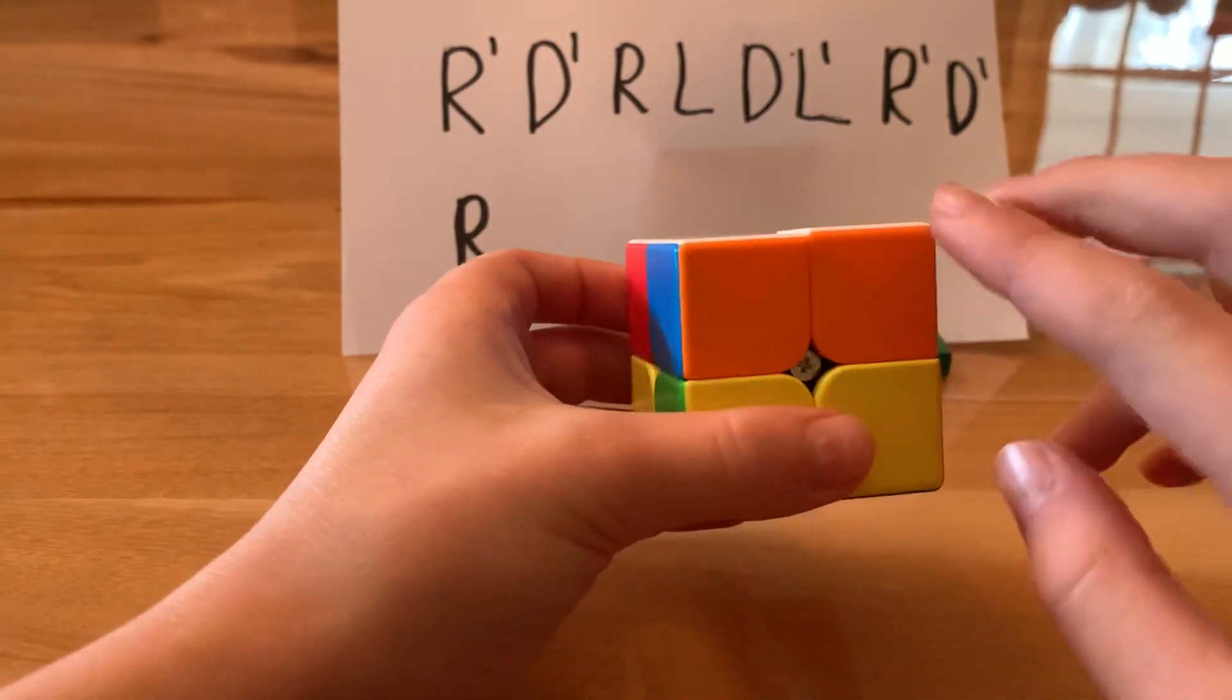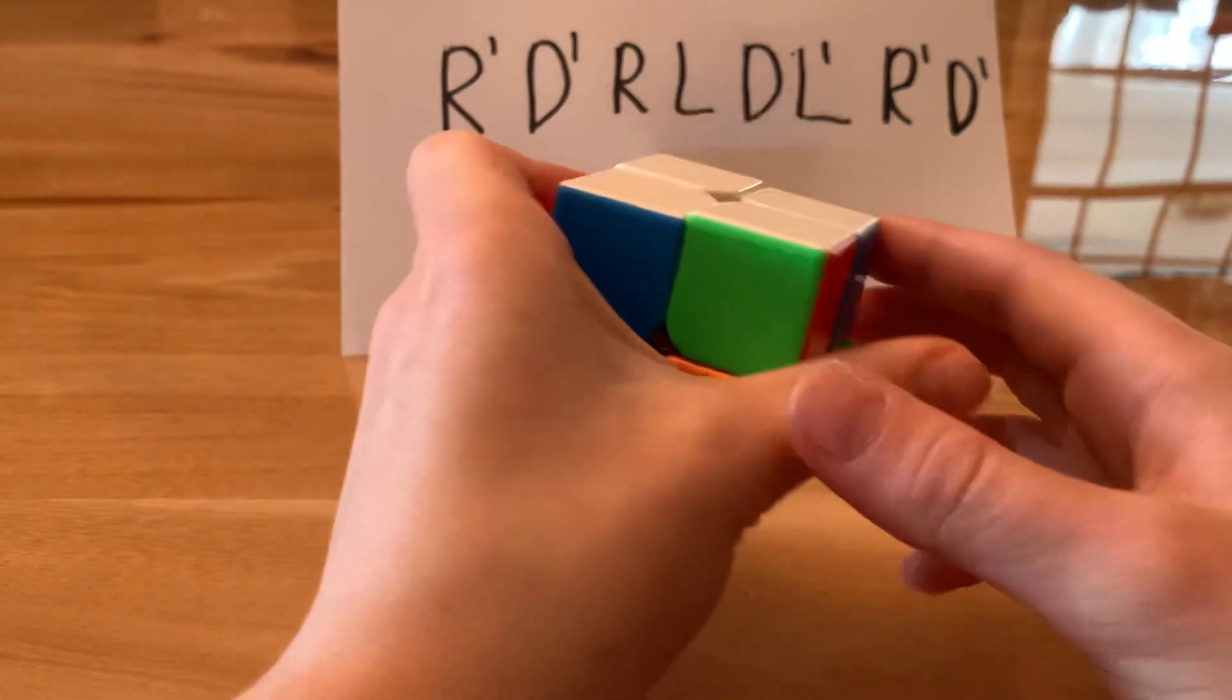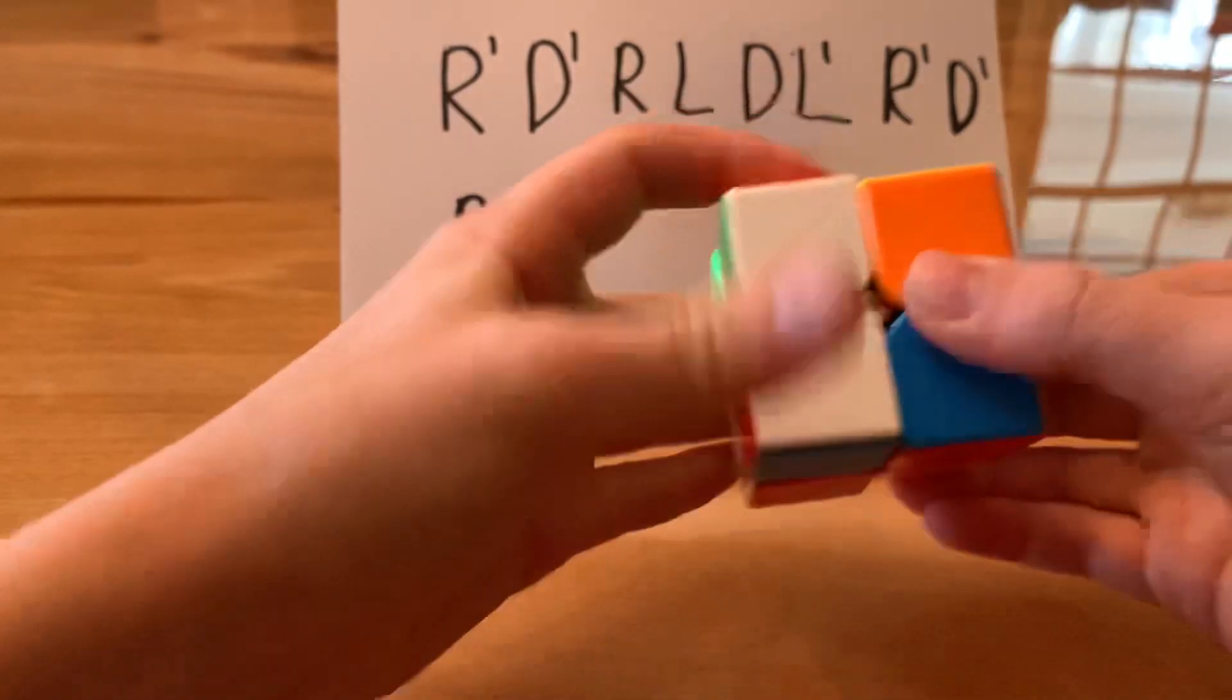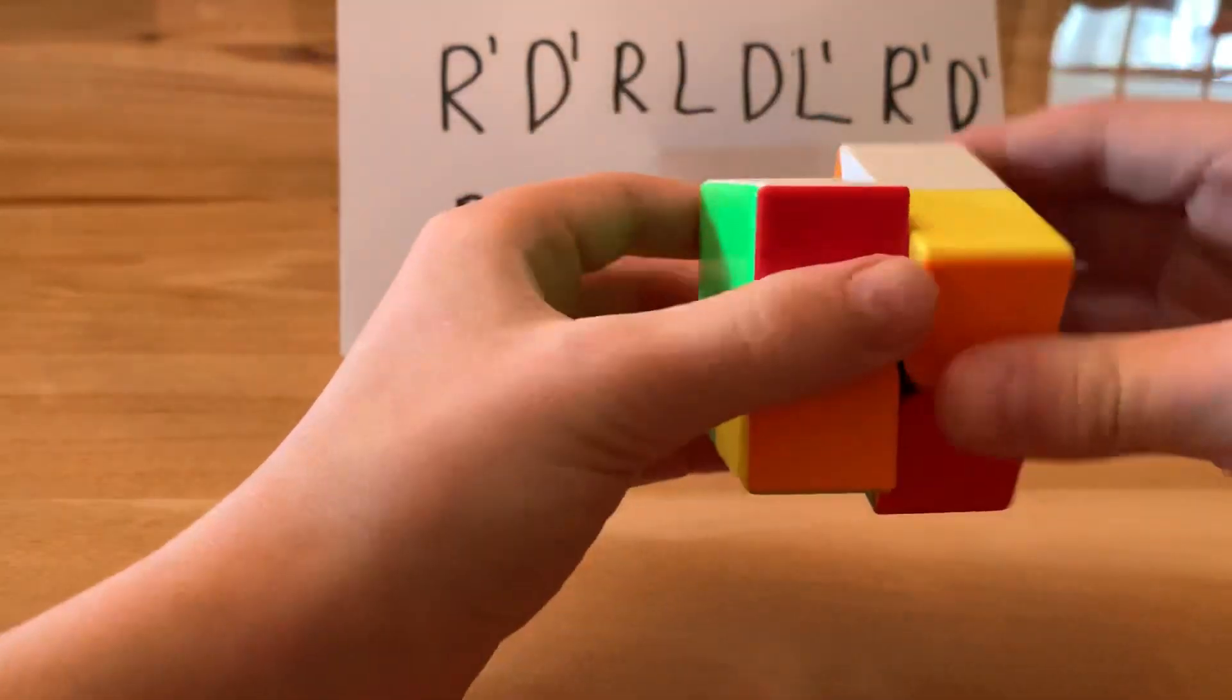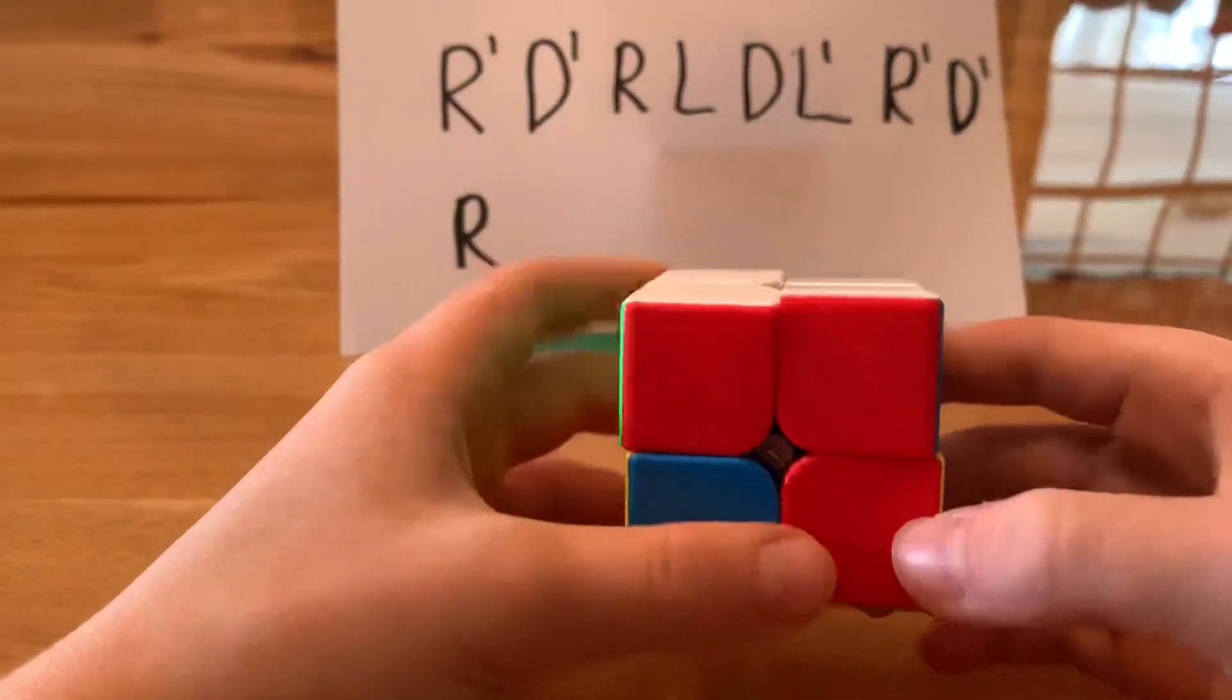Then I have a pair here, so face that away from me and then do it again. R prime, D prime, R, L, D, L prime, R prime, D prime, R. And then this entire layer will be solved.